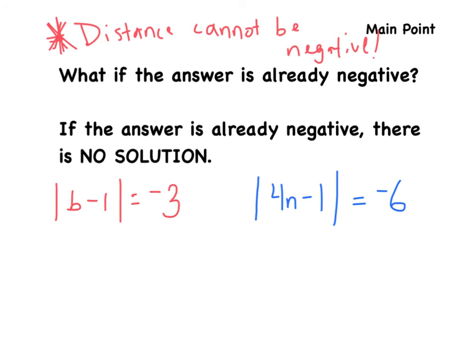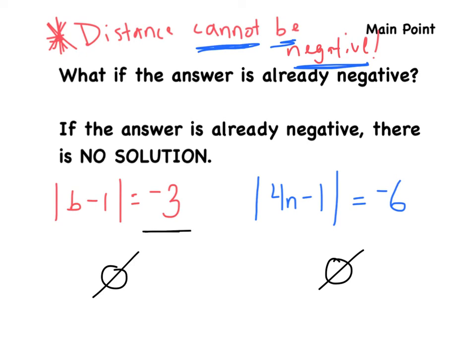Another main point: what if the answer on the right is already negative — for example, negative 3 or negative 6? Remember, distance cannot be negative. So if the answer is already negative, there is no solution. Simply write 'no solution' for either case.